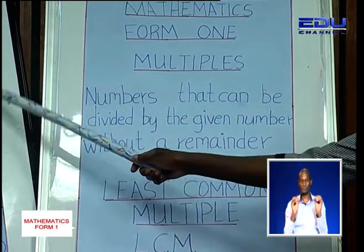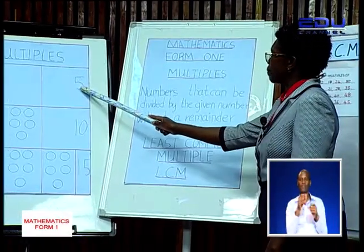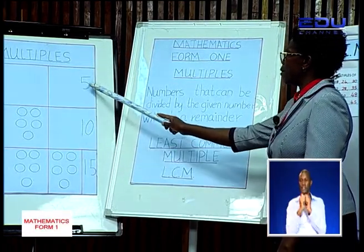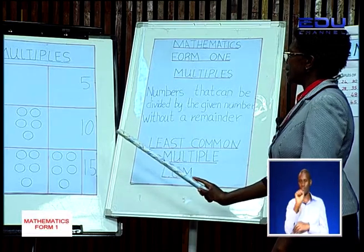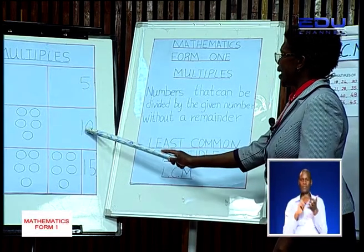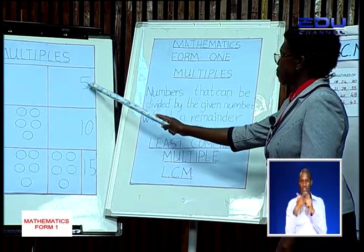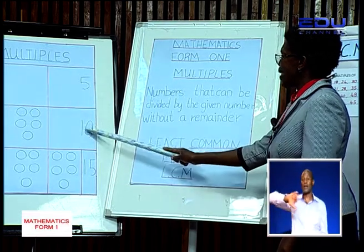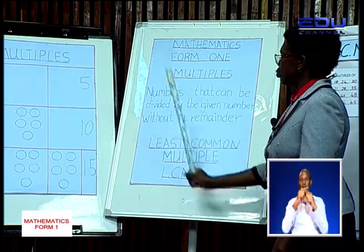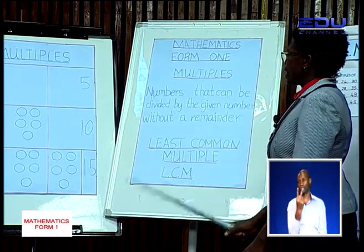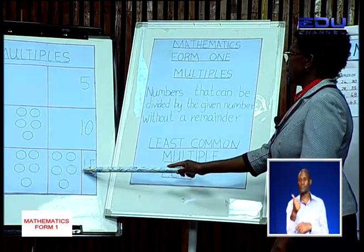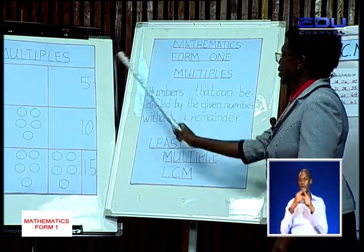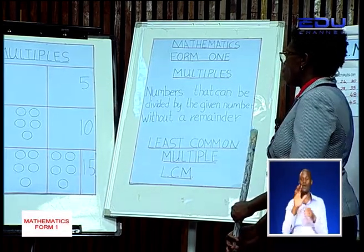Let's go back here. If the given number is 5 and we say that 10 is a multiple of 5, what does it mean? It means that if I take 10 and divide it by 5, I will not have a remainder. And 10 divided by 5 gives us 2. The other multiple of 5 was 15. If I take 15 and divide it by 5, I will get 3 — there is no remainder.